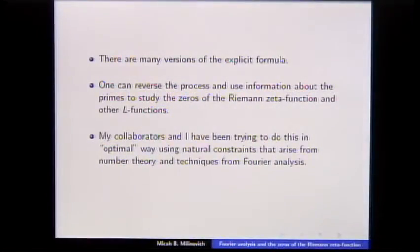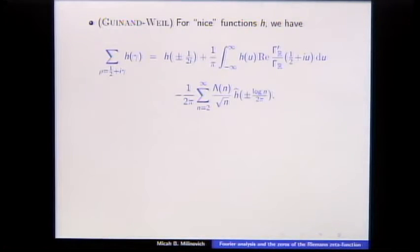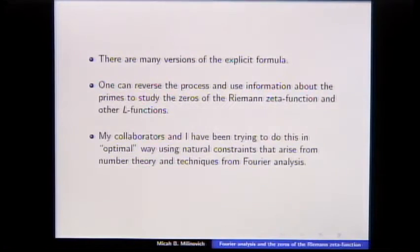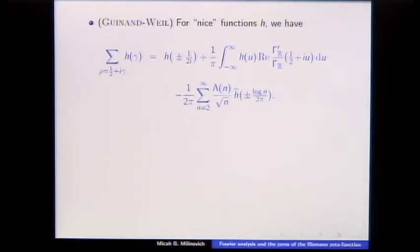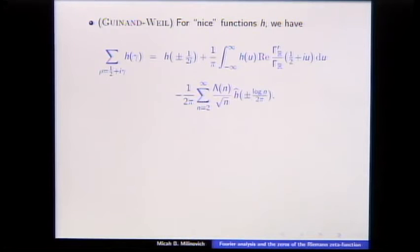So if we want to study zeros, here's the explicit formula in a more general way, due to Guinon for the zeta function and Weil in general for other L-functions. Here, rho equals 1/2 plus i gamma are the zeros of the zeta function. If RH is true, gamma is real; otherwise, gamma could be a complex number with real part less than a half.